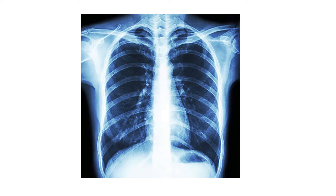First of all, how to read the X-ray. The first thing you have to describe is the type. The type of this radiological film is a plain type, because no special position is required and no radio-opaque dye is used.